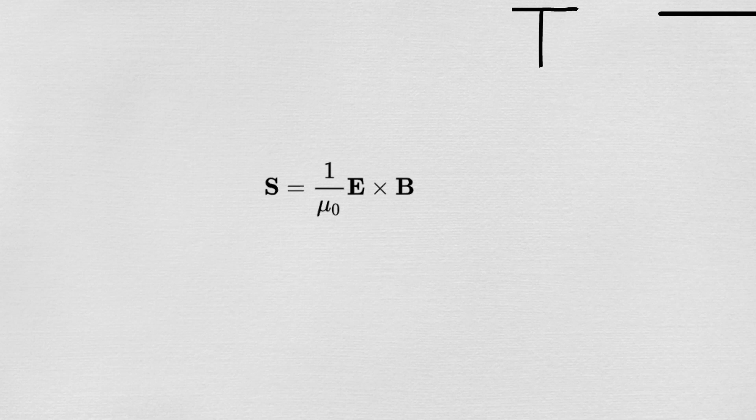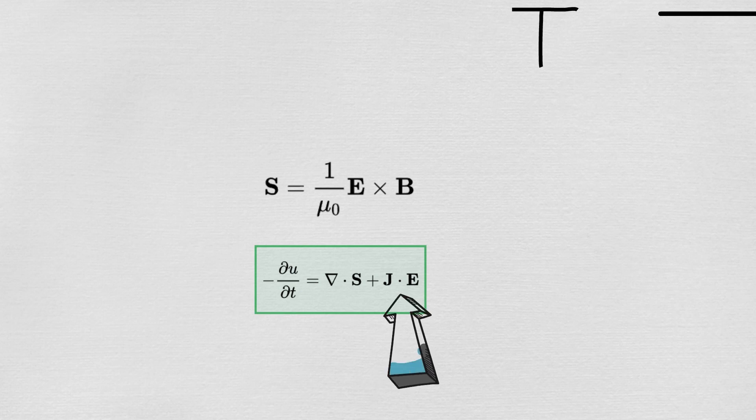If U is the E-M field energy density, then the time rate of change of the energy density is given by the divergence of our usual Poynting vector plus another term. Wait, what's this J here? That's the current density and comes from the motion of charges. In fact, this entire term, J dot E, is the electric power dissipated by the circuit. If J is zero, there's no power, and the bulb doesn't turn on.